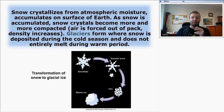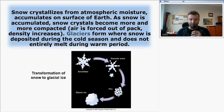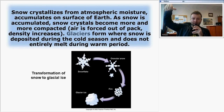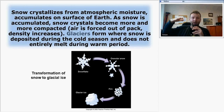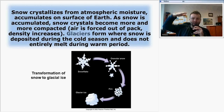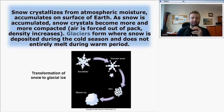Snow is deposited during the cold season but some of it will melt during the warm period. The snowflake goes through the transition from granular snow to firn. If it stays in the same place and another year brings more snowfall, the new layers of snow will compact the snow underneath. If enough compaction occurs, glacier ice can appear.